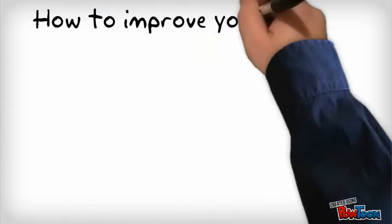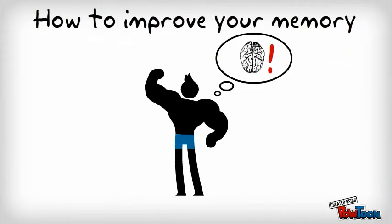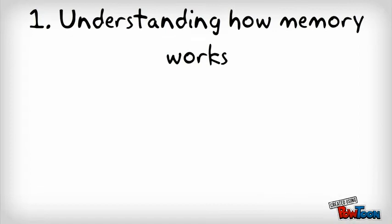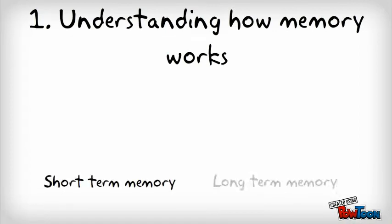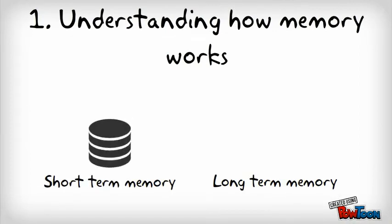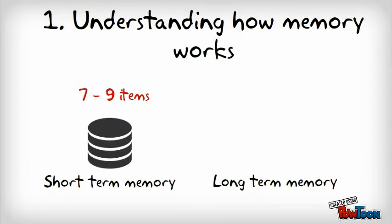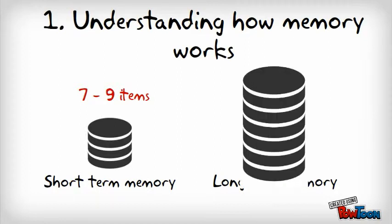How to improve your memory. Step 1: Understanding how memory works. The difference between short and long-term memory is a key one. Short-term memory is the capacity to hold a small amount of information in an available state for short periods of time. The average person can hold seven items, though some people have been found to hold as many as nine elements in their short-term memory.